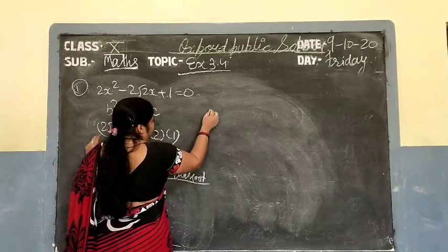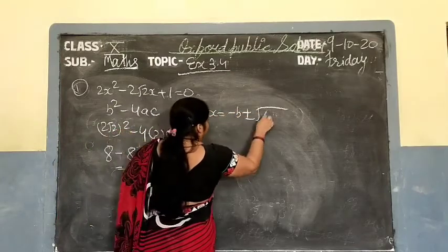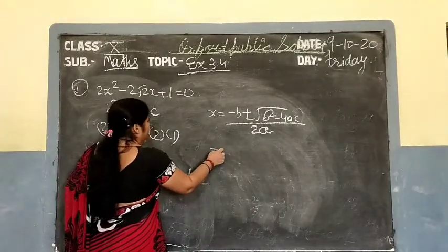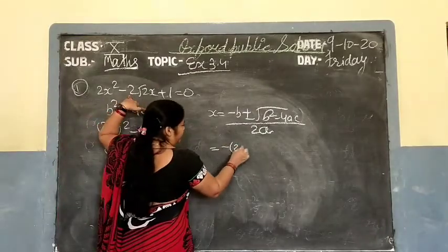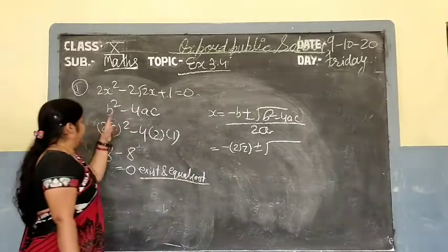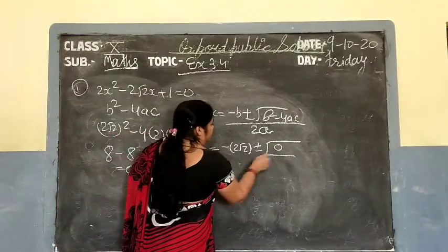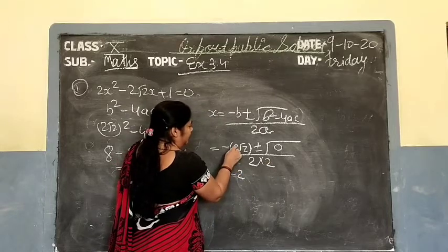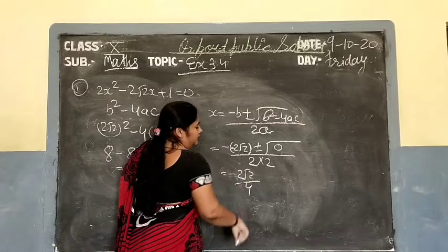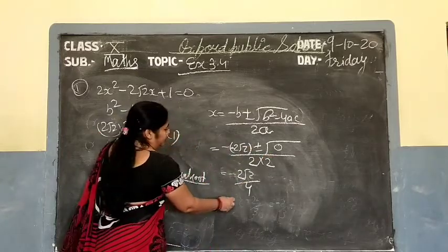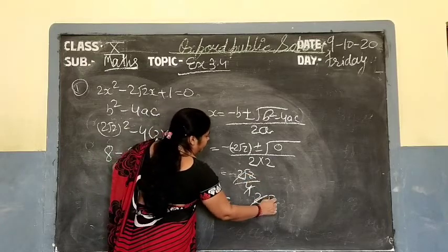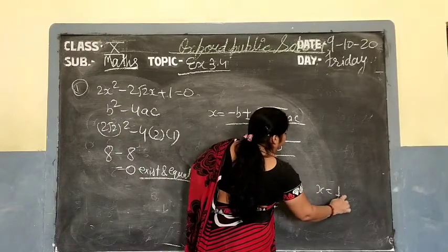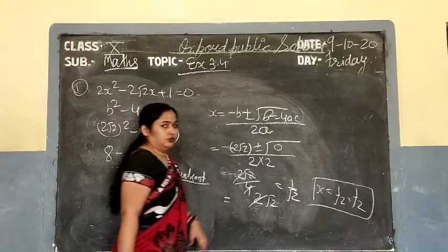The Sridharacharya formula is: x equals minus b plus minus root of b square minus 4ac upon 2a. Substituting: b is 2 root 2, so b square is 4 times 2 equals 8. Then 8 minus 4 times 2 times 1 equals 8 minus 8 equals 0. So discriminant equals 0, meaning roots exist and are equal roots. Solving, the 2 and root cancel, giving x equals 1 upon root 2.